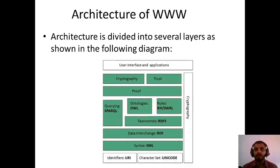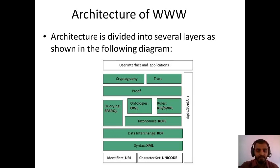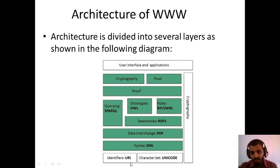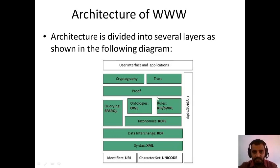Moving to the architecture of World Wide Web. The architecture is divided into several layers as shown in the following pictorial representation. In this architecture you have different things — cryptography, ontology, RDFS, RDF, XML, Unicode, and also cryptographic trust and proofs. We will study these things in the coming sessions. As of now, this is the architecture of World Wide Web.